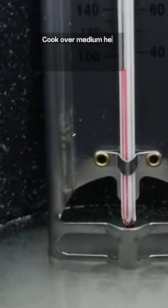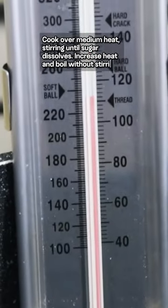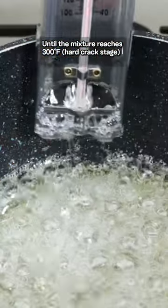Cook over medium heat, stirring until sugar dissolves. Increase heat and boil without stirring until the mixture reaches 300 degrees Fahrenheit (hard crack stage) on a candy thermometer.